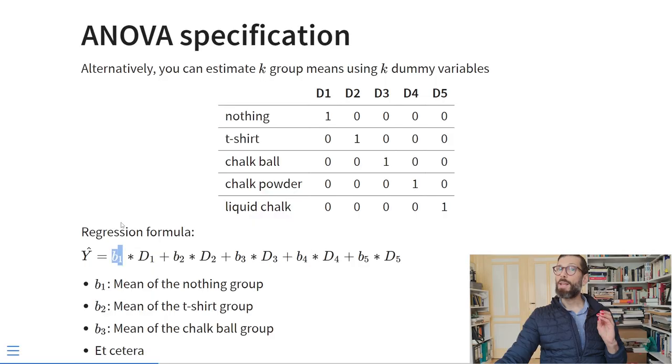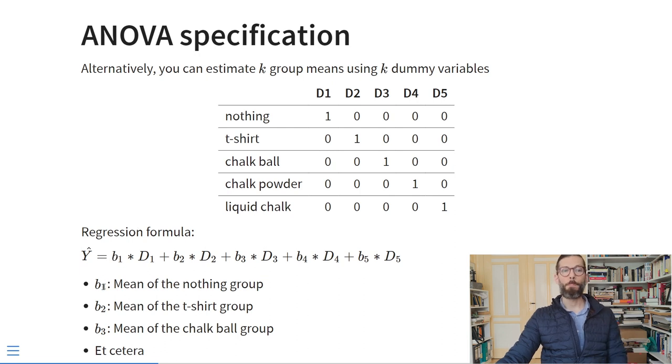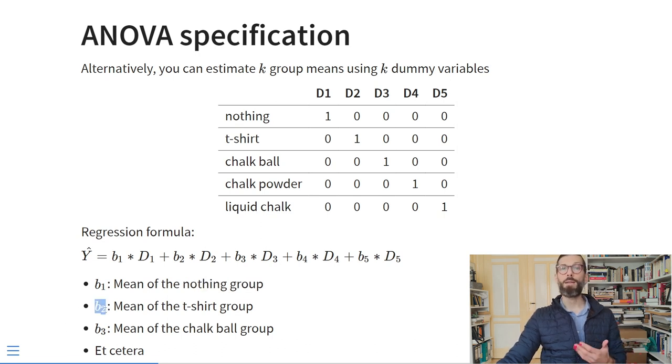In the ANOVA specification, each regression slope gives us the mean value of the category encoded by that dummy. So b₁ is the mean of the do-nothing group, b₂ is the mean of the t-shirt group, b₃ is the mean of the chalk ball group, etc. Both models are mathematically identical — we just replaced the intercept with one additional dummy variable.